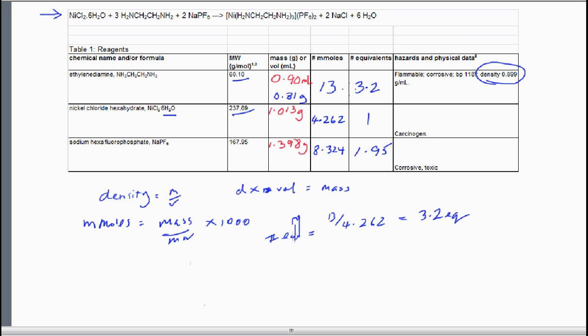Now these values, the number of equivalents, should relate to the coefficients that we see in the balanced equation. Remember that the nickel chloride actually has a 1 that's understood in front of it. So you can see there's a 1 to 3 to 2 ratio expected in the balanced equation. This value is a little bit more than 3, meaning we have some excess ethylenediamine.